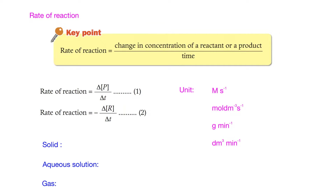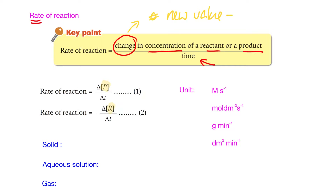Rate of reaction involves some mathematics. The rate must be related to time, so we look at the change in concentration of reactants and products over time. This is the definition of rate of reaction. Change means new value minus old value. For products, the rate is: total product formed minus the product at the very beginning, divided by time — this will be a positive value.